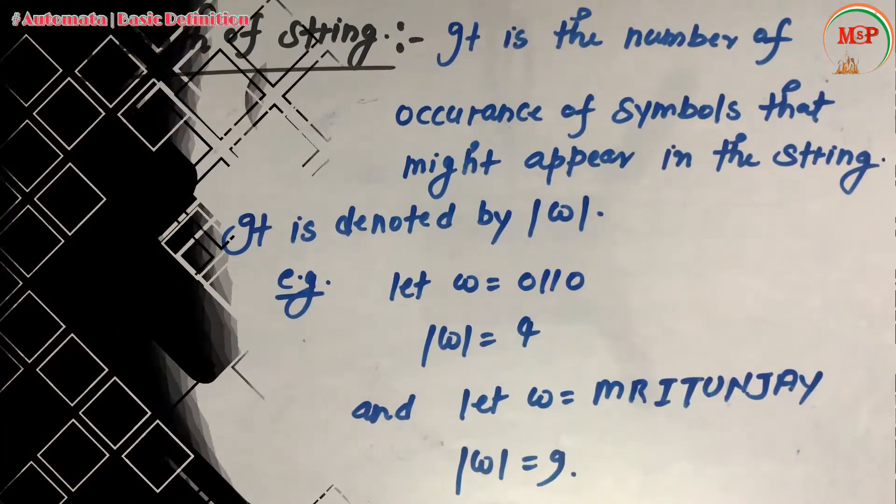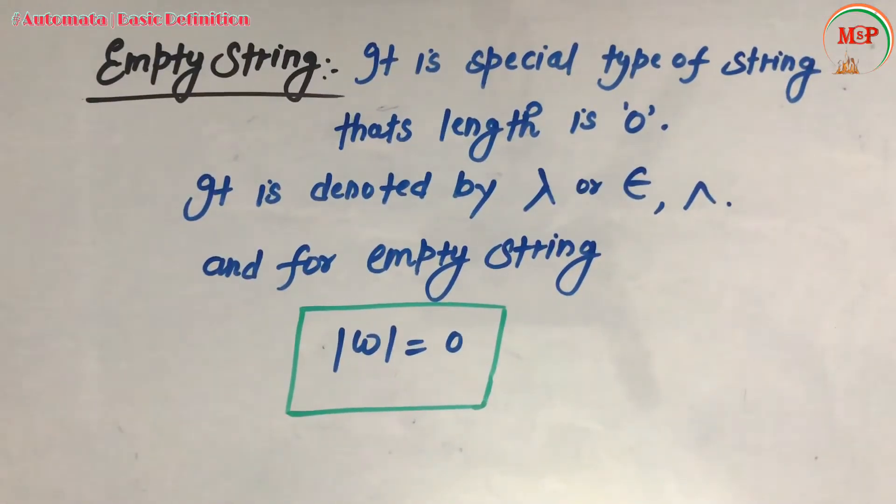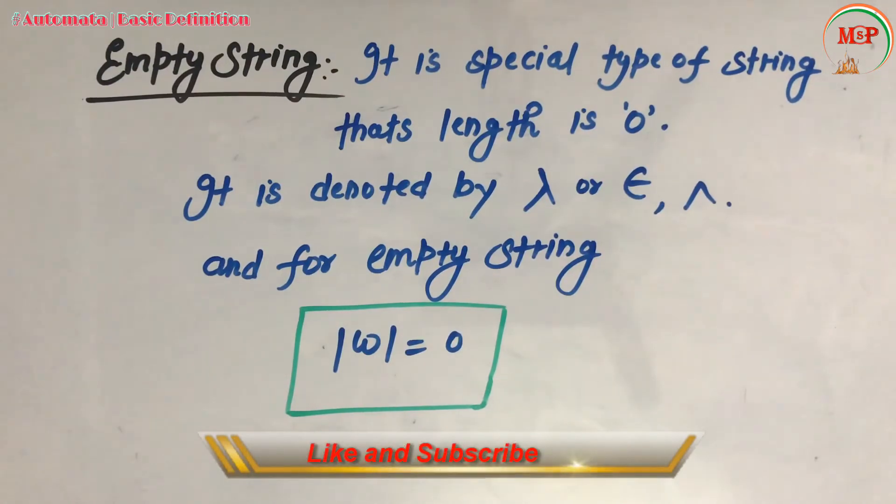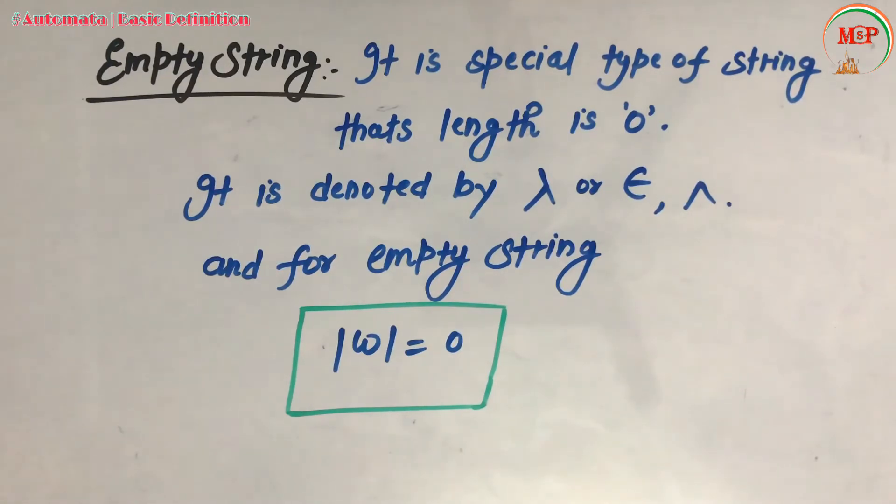The next definition is empty string. It is a special type of string whose length is 0, and it is represented by lambda or epsilon or carat symbol. For the empty string, |w| = 0 because there is no alphabet present in empty string, so it is also called null string.